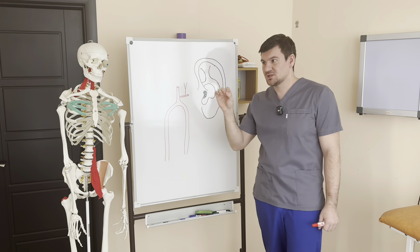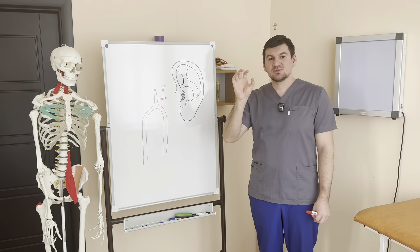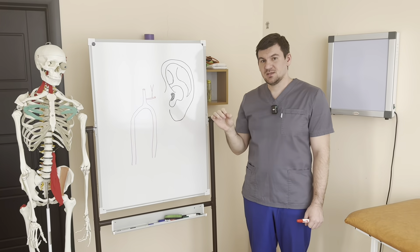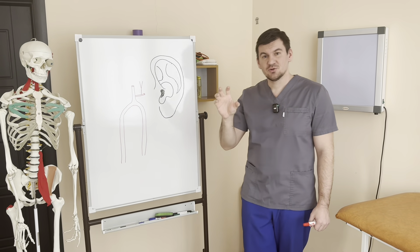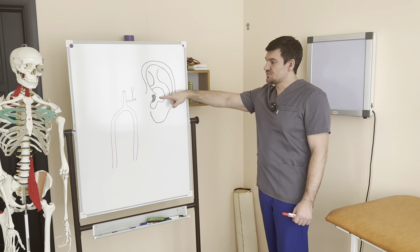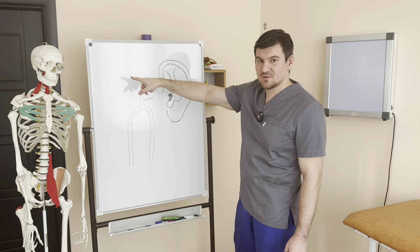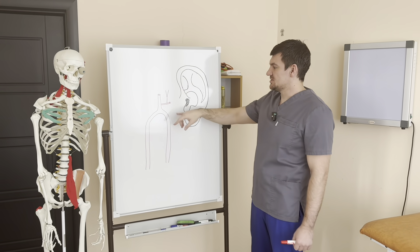And already from this anterior lower cerebellar artery we have a labyrinthine artery branching off, which in turn divides into branches and they supply blood to the entire structure of our sound receiving apparatus.